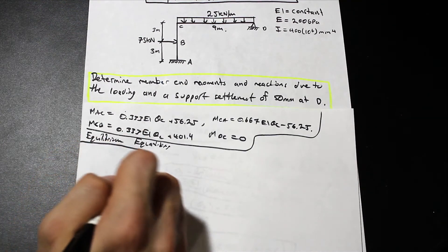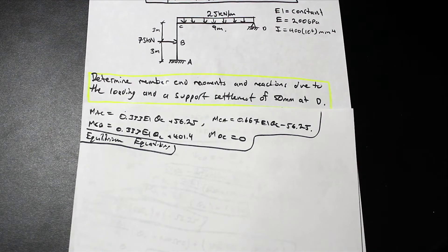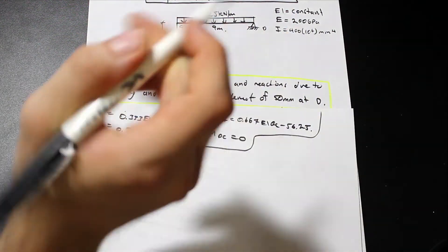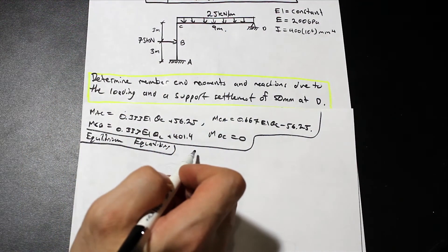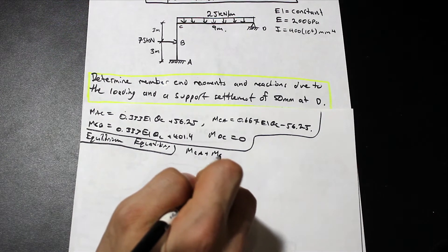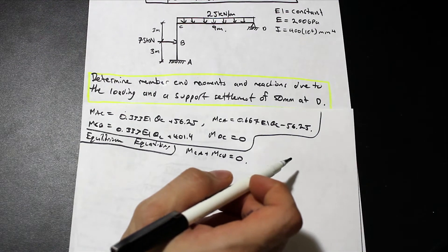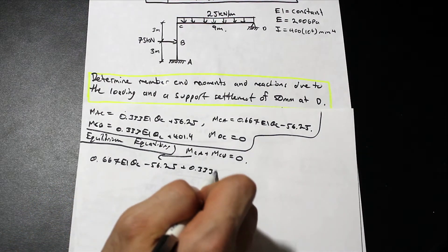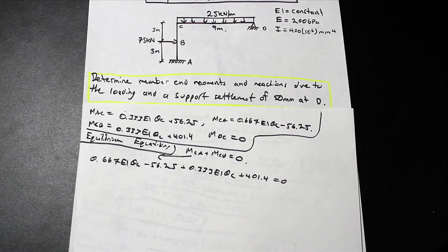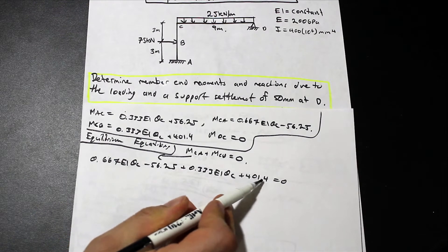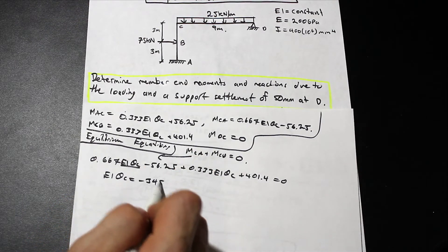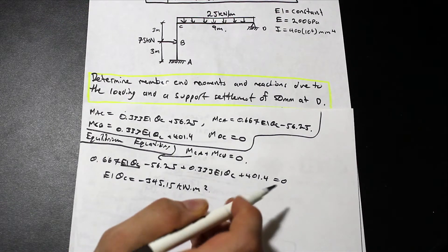Now let's find the equilibrium equation. At the rigid joint C, the sum of moments must equal zero, so MCA plus MCD equals zero. Substituting in the expressions and simplifying: adding 401.4 and subtracting 56.25, we solve for EI·θ_C and get EI·θ_C equals negative 345.15 kilonewton meters squared.